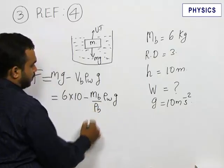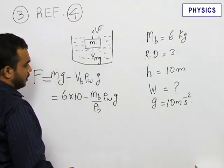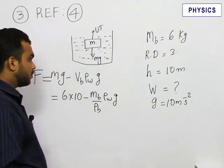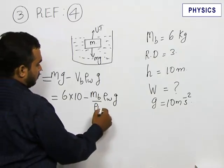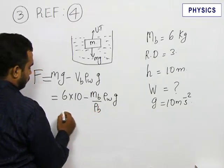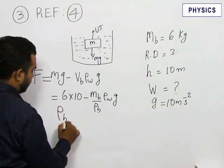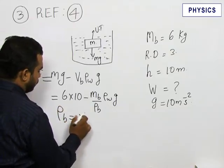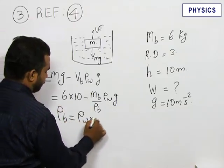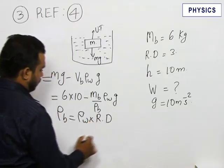You know that density of the brick can be found in terms of relative density, which is nothing but relative density into density of water. So we can write density of brick is equal to relative density into density of water.